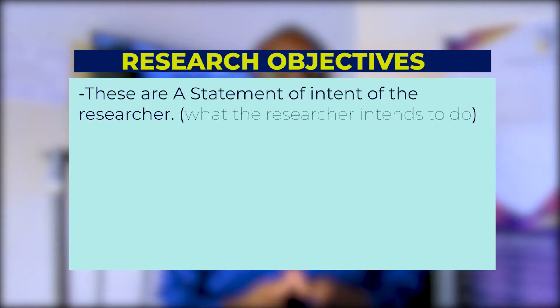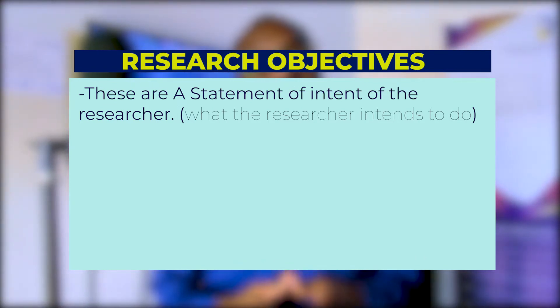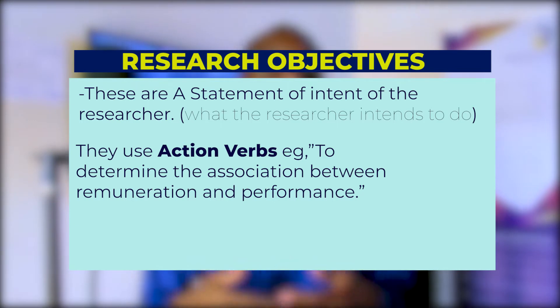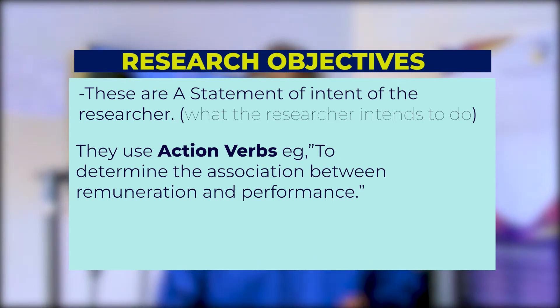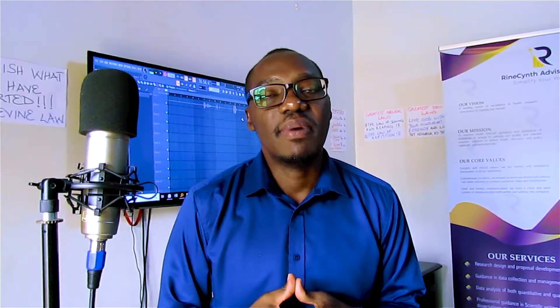What are research objectives? Research objectives are usually a statement of intent of the researcher — the researcher is telling us what they intend to do. They usually contain action verbs, such as 'to determine the association between remuneration and performance.' They are, in essence, a topic statement that has been given an action verb.